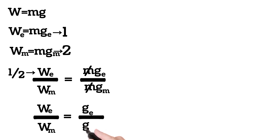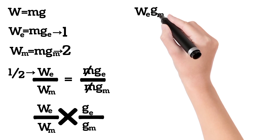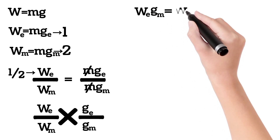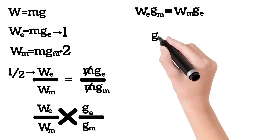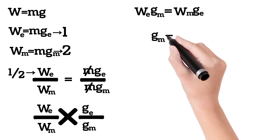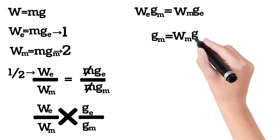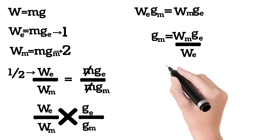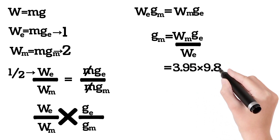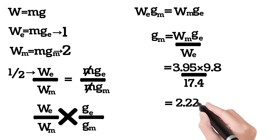Rearranging, WE divided by WM equals GE divided by GM. Solving for GM: GM equals WM multiplied by GE divided by WE. The answer is 2.22 m per second squared.